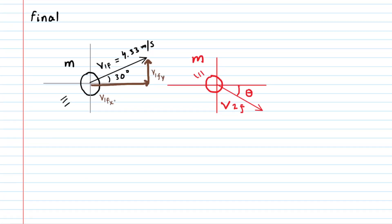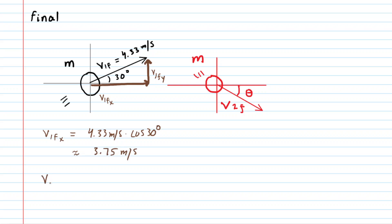Let's start with the x component. The x component is adjacent to the 30-degree angle, so we will use the cosine. The final velocity for ball one in the x direction is 4.33 meters per second multiplied by the cosine of 30 degrees, which equals approximately 3.75 meters per second. For the y component, it is opposite the 30-degree angle, so we use the sine function, multiplying the velocity by the sine of 30 degrees, giving us 2.165 meters per second.